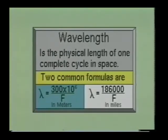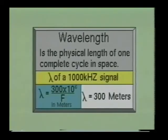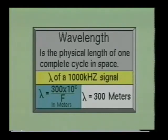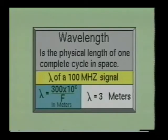Stated mathematically, 300 times 10 to the sixth power divided by frequency equals wavelength in meters, and 186,000 divided by frequency equals wavelength in miles. The symbol for wavelength is the Greek letter lambda. For example, suppose we wish to find the wavelength of a radio station which operates on a carrier frequency of 1000 kilohertz. Using the formula, wavelength equals 300 times 10 to the sixth power divided by the frequency; the actual length of one cycle in space of this radio wave is 300 meters long. The wavelength of a TV station operating at 100 megahertz would be 300 times 10 to the sixth power over 100 times 10 to the sixth power, or three meters.